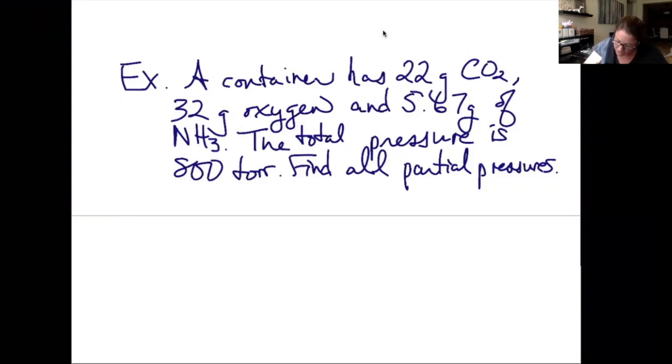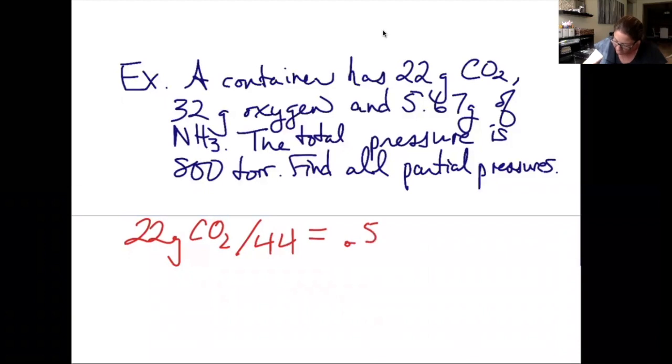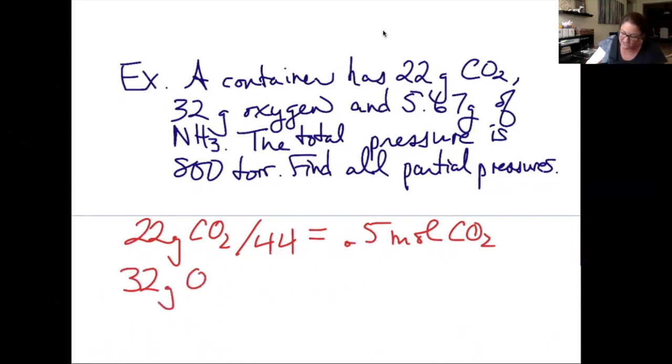So 22 grams of CO2, I divide by CO2's molecular weight, which is 44, and that gives me 0.5 moles of CO2. 32 grams of oxygen, oxygen's diatomic, so the molecular weight is 32, gives me 1 mole of O2.